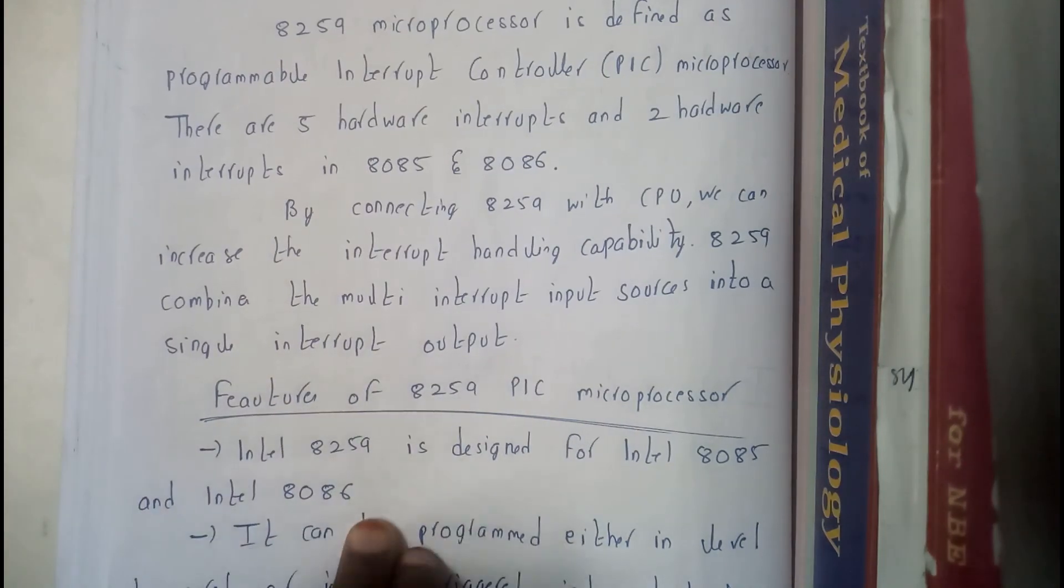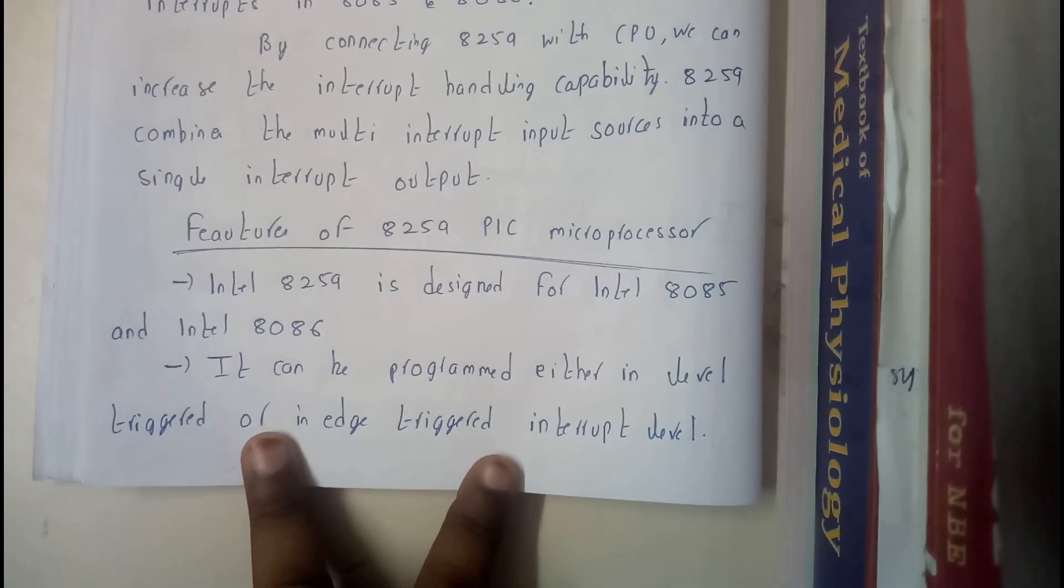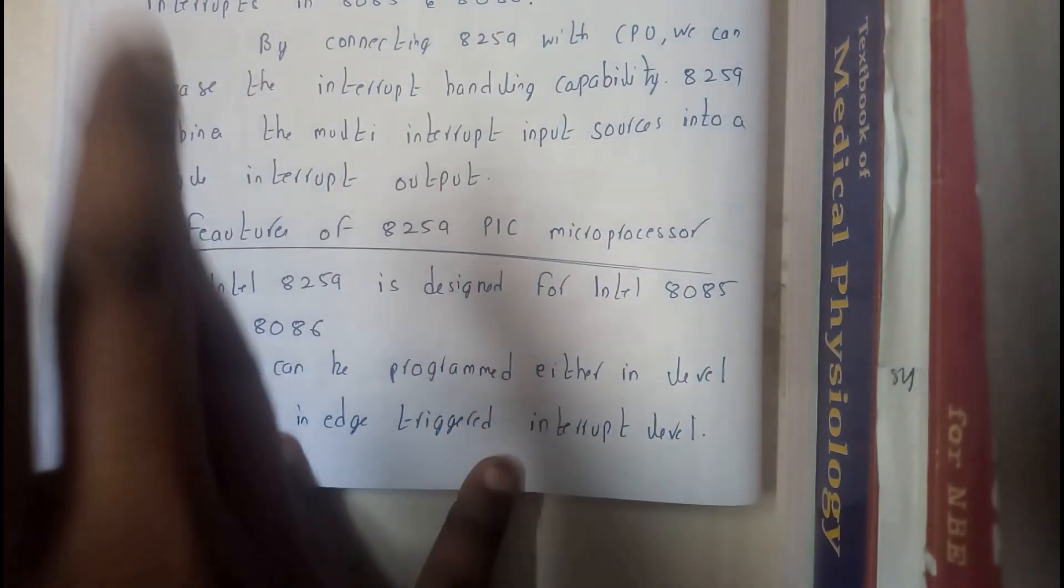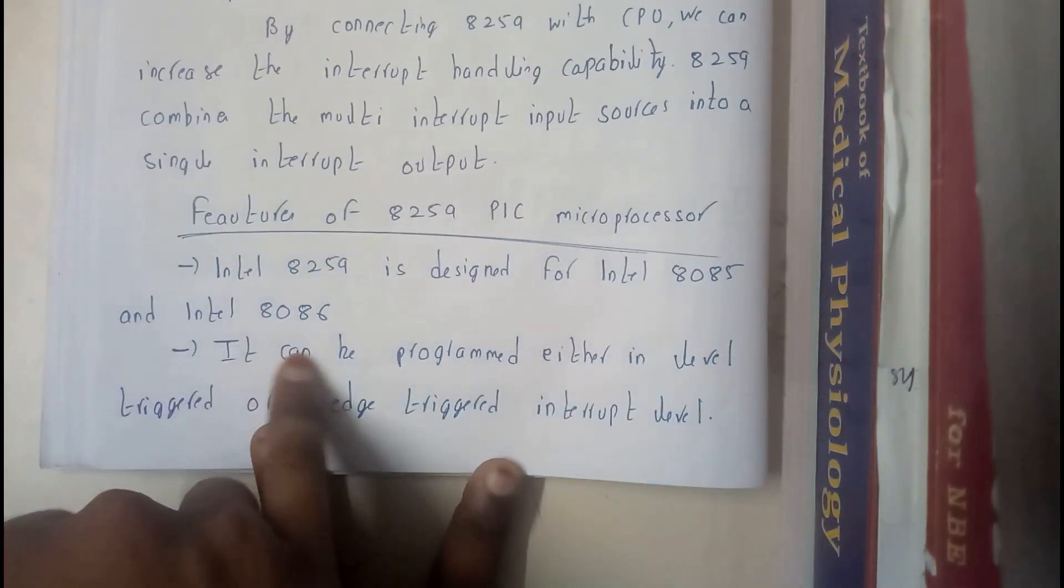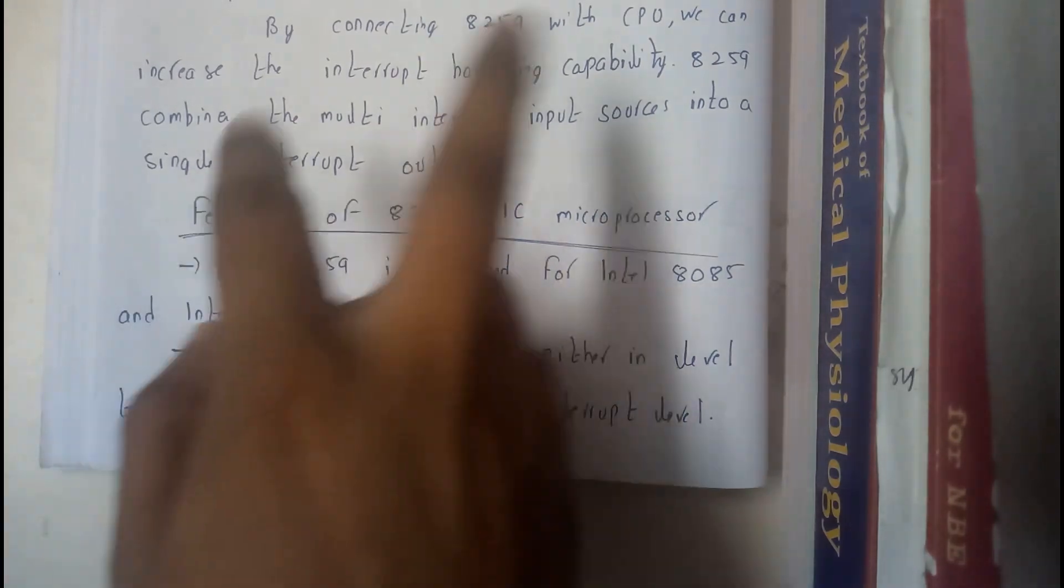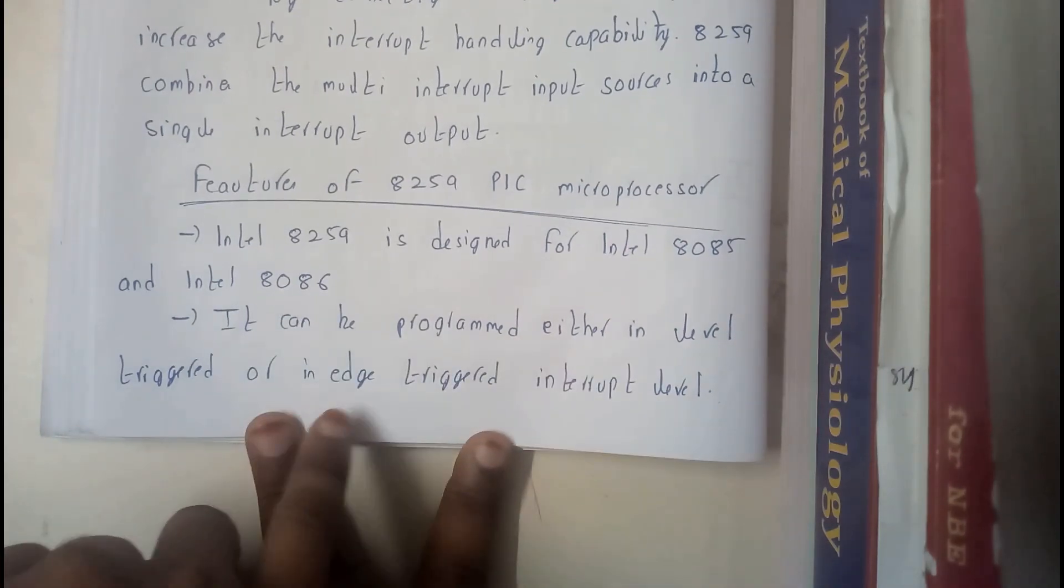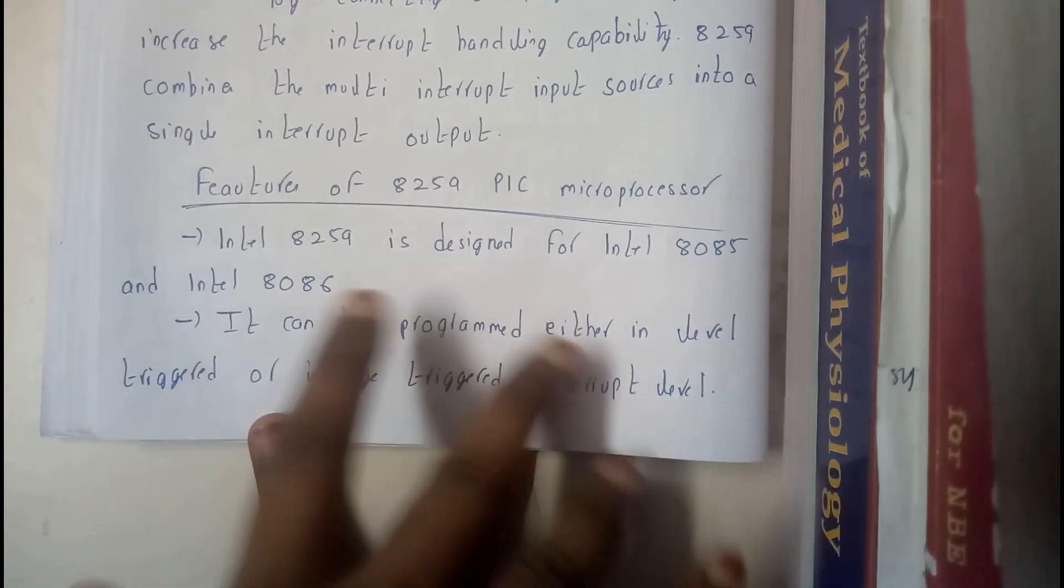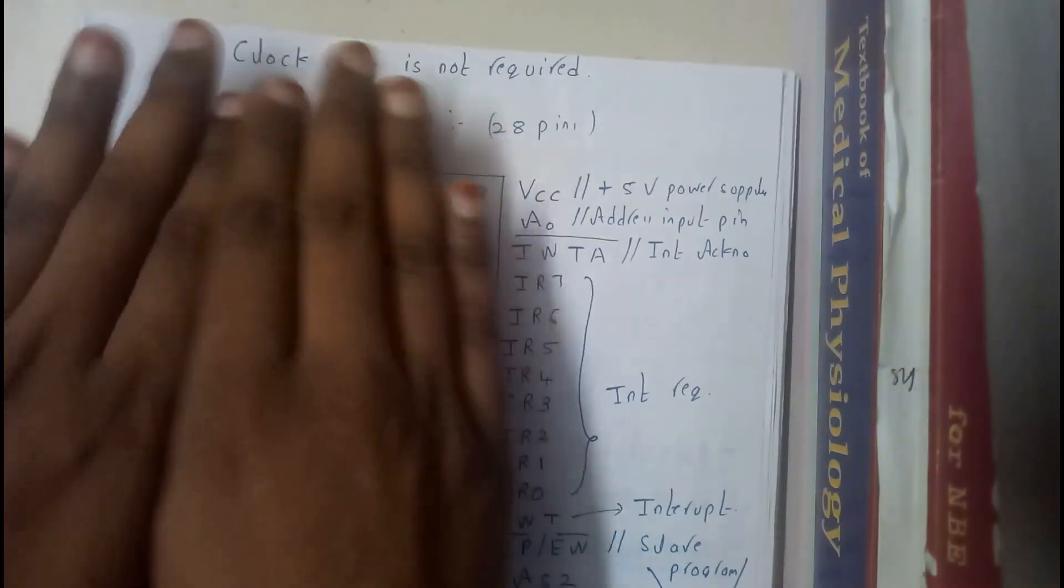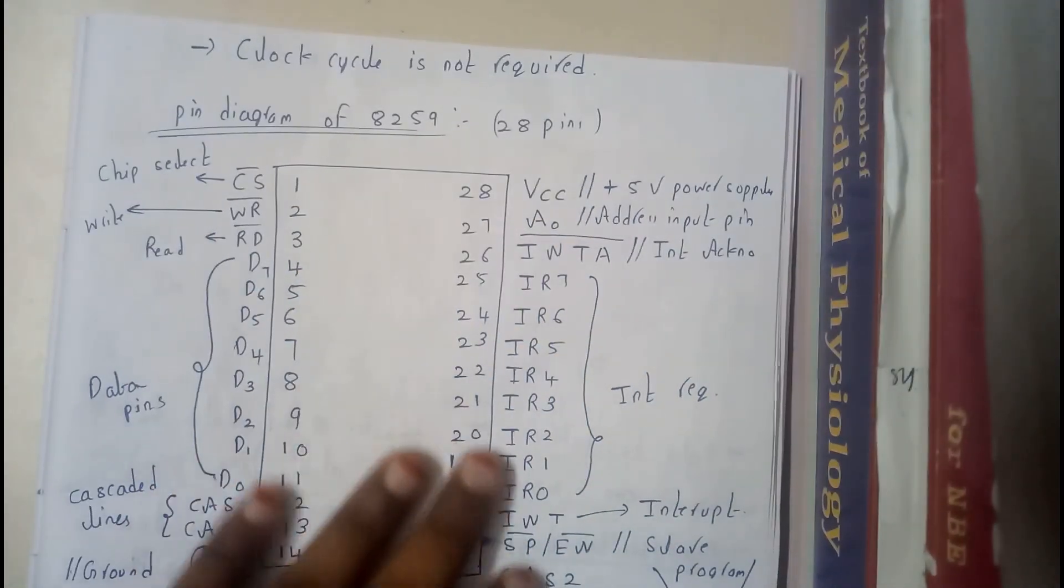So basically what are the features of 8259 PIC - programmable interrupt controller. Intel 8259 is designed for Intel 8085 and Intel 8086. This can be programmed with both 8085 and 8086. It can be programmed either in level trigger or edge trigger input level. So it can work in 2 stages - level trigger and edge trigger. For this interrupt controller, there is no need of any clock.